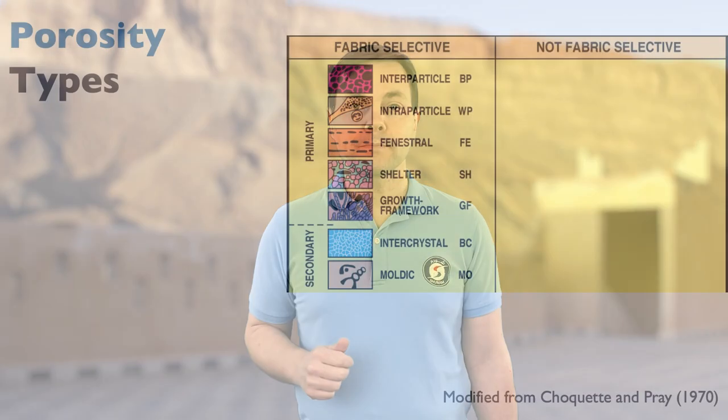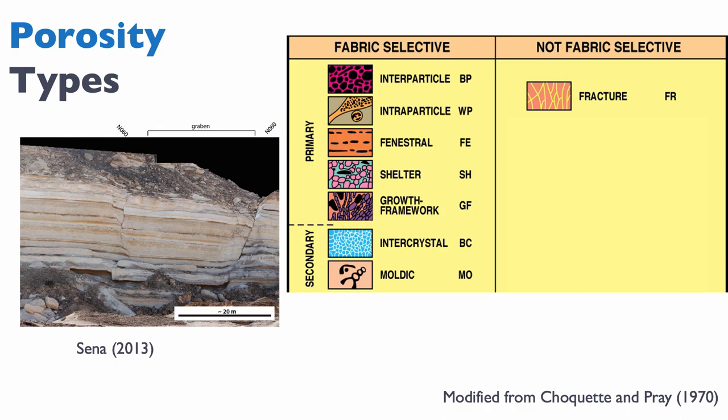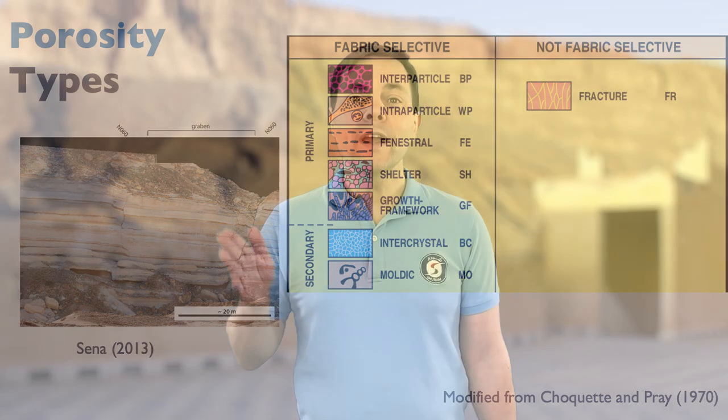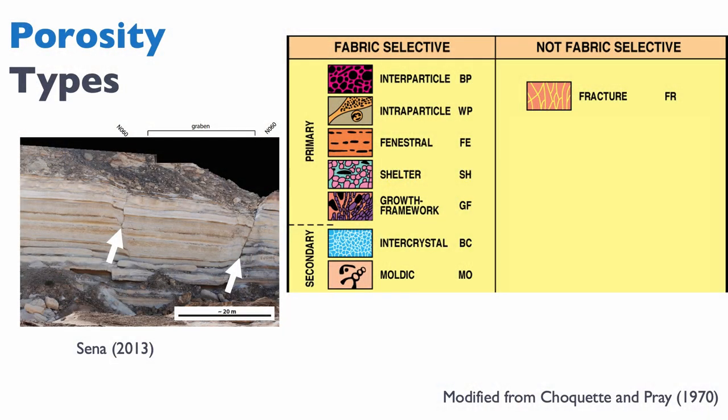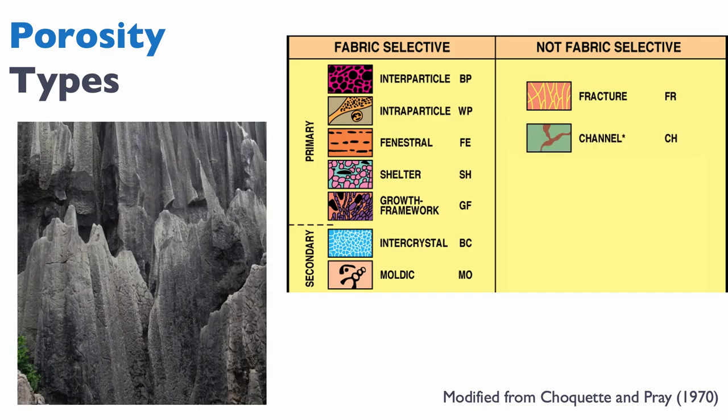Non-fabric selective porosities are always secondary — they are never present at time of deposition, which is why we don't distinguish between primary and secondary for this category. Fractures are a good example: here we have an outcrop-scale fracture, but you can also have them at the thin section scale. We can also have channels, which are effectively fractures that were dissolved — here's an example of a channel.